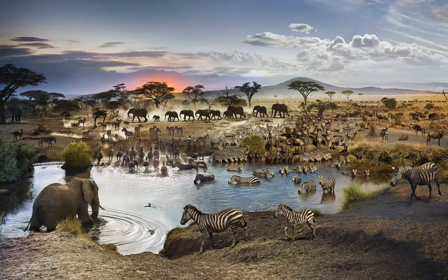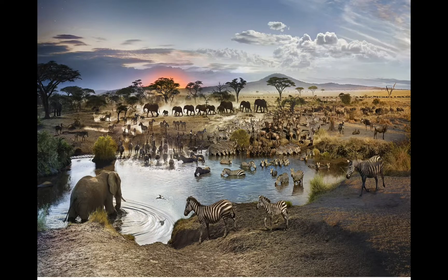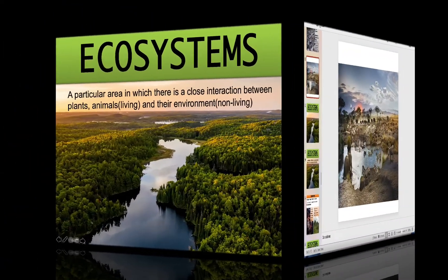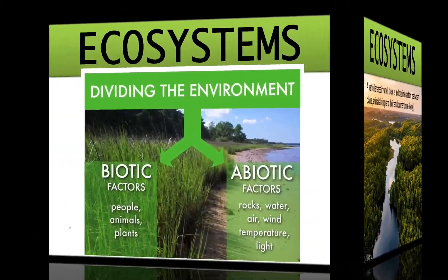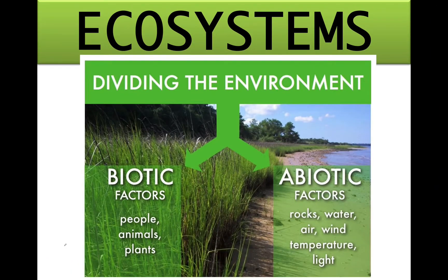A particular area in which the living components are interacting with each other as well as with the non-living components is called an ecosystem. So, what have we discovered? We have discovered that within an ecosystem, there are both living as well as non-living components.